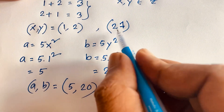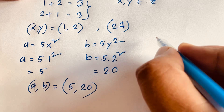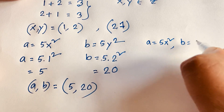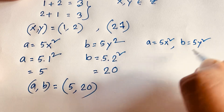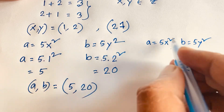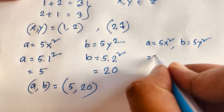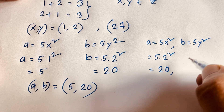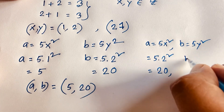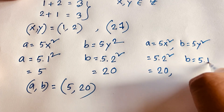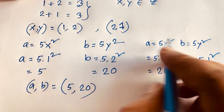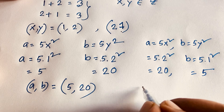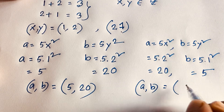In Case 2, when x equals 2, A equals 5 times 2 squared equals 5 times 4 equals 20. And when y equals 1, B equals 5 times 1 squared equals 5. So in this case, A and B equal 20 and 5.